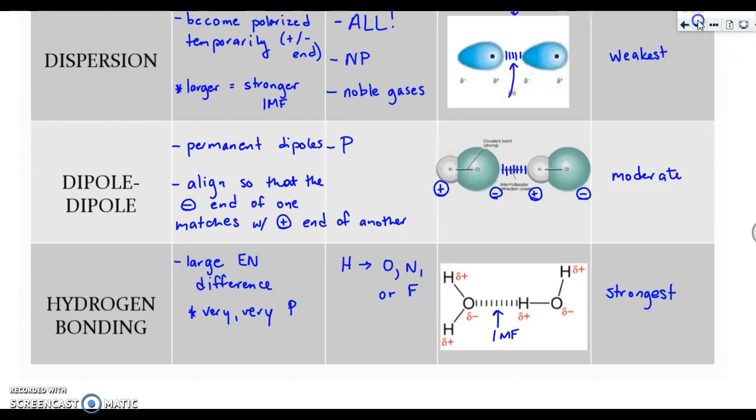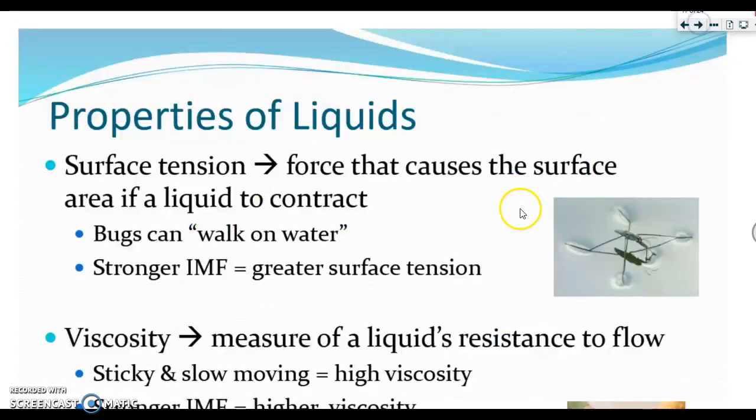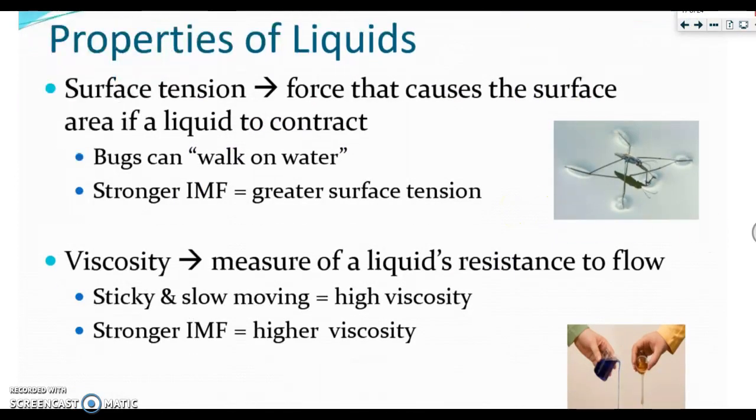Let's continue on, and then we will do some practice. Something else that's important to note is the properties of some liquids. One property of liquid is surface tension. This is the force that causes the surface area of a liquid to contract. It's what allows bugs to, quote-unquote, walk on water. There is a connection to IMFs and this property. The stronger the IMF, the greater the surface tension. That means H bonding is greater than dispersion.